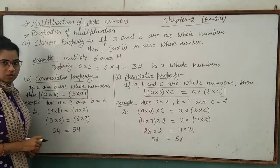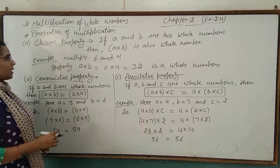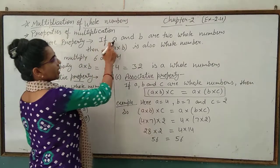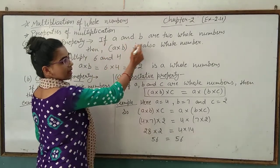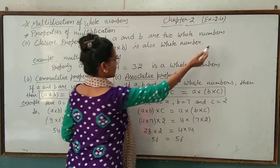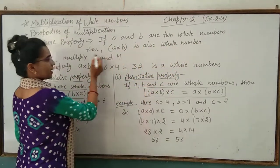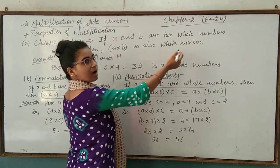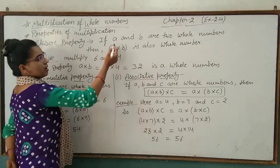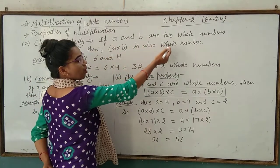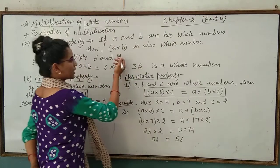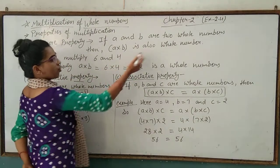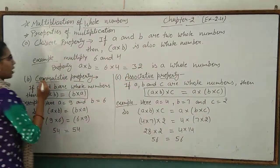There are some properties of multiplication. The first is the closure property: if a and b are two whole numbers, then a multiplied by b is also a whole number. That means when we multiply two whole numbers a and b, the answer we get is also a whole number.